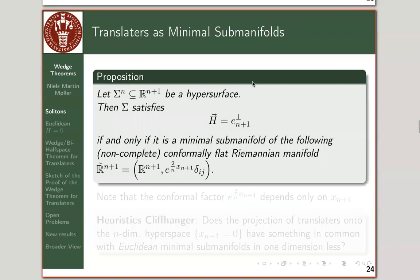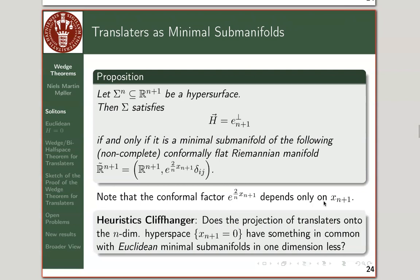A small interlude: another way to think about these problems. If you have a hypersurface satisfying the self-translator elliptic PDE, then this is satisfied if and only if it is a minimal submanifold of a conformally flat metric on the ambient space. You essentially put an exponential function in the translation direction as a conformal factor and rescale Euclidean space.